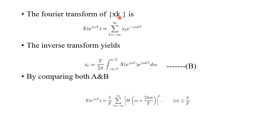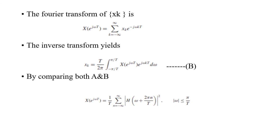The Fourier transform of x(k) is X(e^jωT) = Σ(k=−∞ to +∞) x(k)·e^(−jωkT), where z is replaced by e^jωT. The inverse transform gives x(k) = (T/2π) ∫(−π/T to +π/T) X(e^jωT)·e^(jωkT) dω, noted as equation B. Comparing equations A and B: X(e^jωT) = (1/T) Σ(n=−∞ to +∞) |H(ω + 2πn/T)|², for |ω| < π/T.